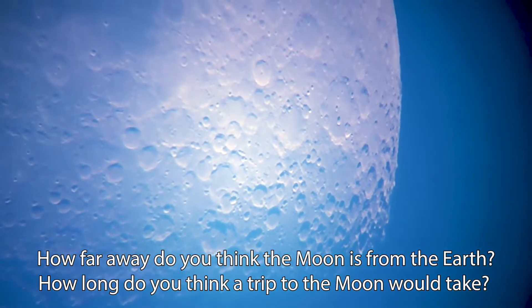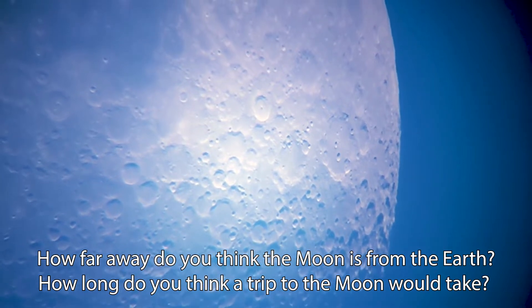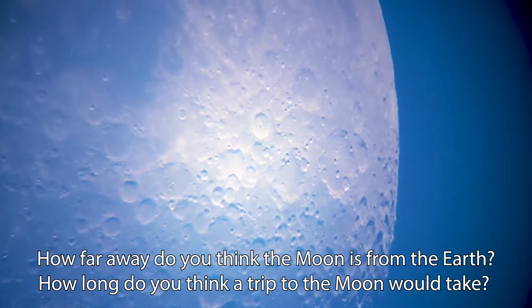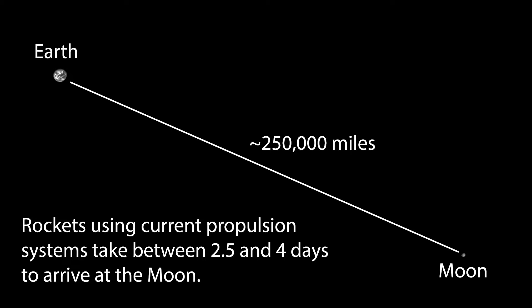How far away do you think the Moon is from the Earth? How long do you think a trip to the Moon would take? The Moon is about 250,000 miles away from Earth. Rockets using current propulsion systems take between two and a half and four days to arrive at the Moon.